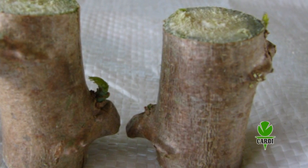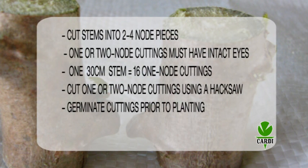The cuttings should be no less than half the diameter of the thickest part of the stem. No cutlasses should be used on the cutting of stems — use a hand saw. The best part of the head stem's cuttings must be mature, not green, not thin, and you can use secondary stems.